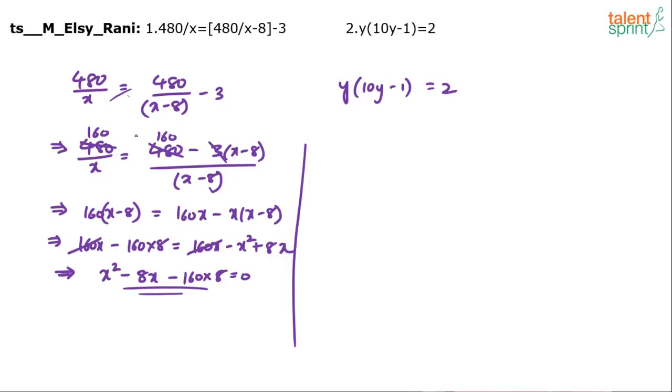So simplify it. I think you can take 32 and 40 there. And the right hand side equation, I mean the equation in y is very simple right. That's like 10y squared minus y minus 2 equals to 0. You know how to solve quadratic equation. Solve the two equations and get the roots.